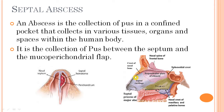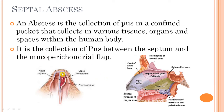In a septal abscess, the pus develops between the septal cartilage and the mucoparichondrial flap. As you can see in this picture of a septal hematoma, the hematoma develops between the septal cartilage and the mucoparichondrial membrane. The abscess develops secondary to this septal hematoma — the hematoma gets infected, bacteria produce pus, and that accumulation of pus in the nasal septum is called a nasal septal abscess.